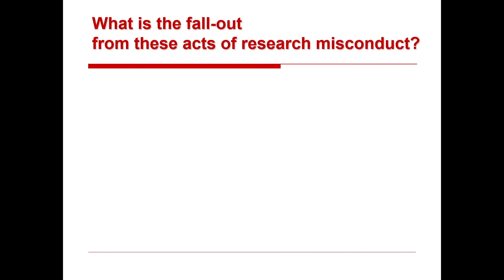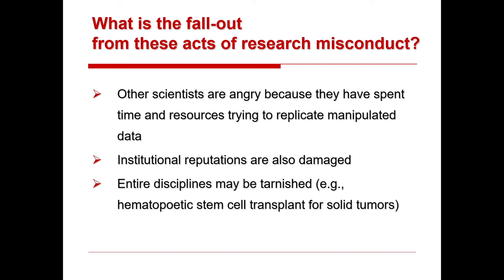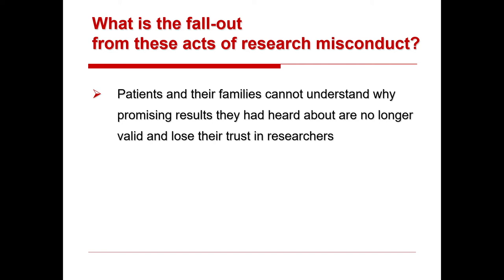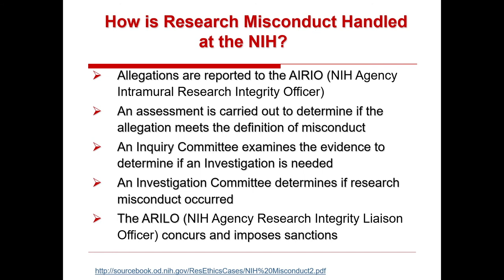So what is the fallout from these acts of research misconduct? Certainly, other scientists become angry because they've spent time and resources trying to replicate manipulated data. Institutional reputations are also damaged, and entire disciplines may be tarnished, such as the hematopoietic stem cell transplant for solid tumors discussed in Section 2. In addition, patients and their families cannot understand why promising results are no longer valid and may lose trust in researchers or in research in general. The public relies on our truthfulness as investigators, so misconduct can undermine science in general.